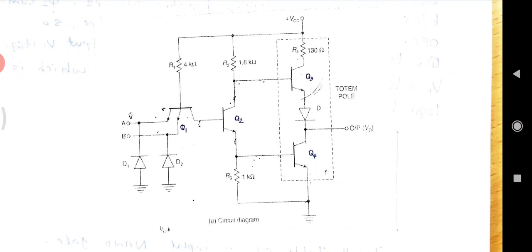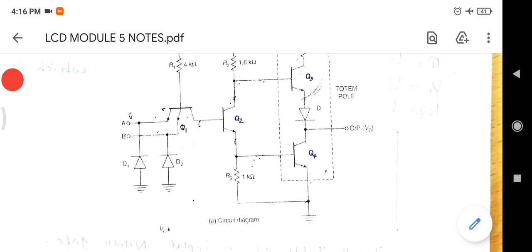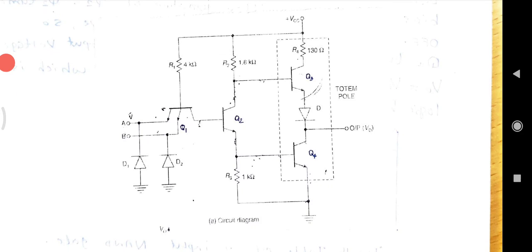So the base voltage of Q3 must be Vb3 equal to Vce4 plus Vd plus Vbe3 equal to 0.7 plus 0.3 plus 0.7 equal to 1.7V for it to be on. Since Vb3 is only 1V when Q4 is on,